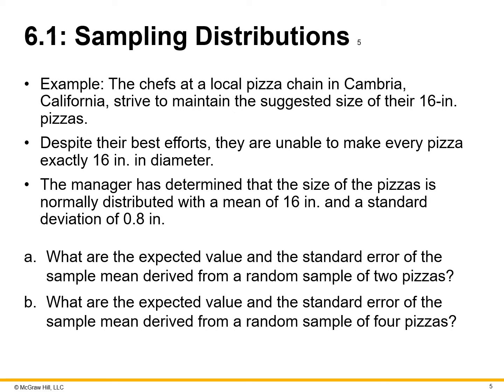The question: what are the expected value and standard error of the sample mean derived from a random sample of two pizzas? And what are the expected value and standard error of the sample mean derived from a random sample of four pizzas? We can take two pizzas — two observations — compare them to see if 0.8 is likely, or if we expand the sample size to four pizzas, is that 0.8 standard deviation more common, or are pizzas closer to 16 inches?